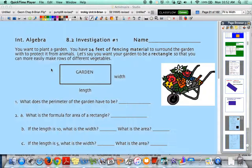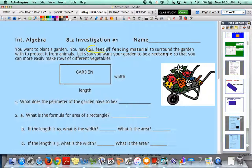Alright, let's check our answers here. If we're thinking back to the warm-up, we've got some similar ideas here. So you want to plant a garden, you have 24 feet of fencing material to surround the garden with to protect it from animals. Let's say you want your garden to be a rectangle so that you can more easily make rows of different vegetables. So the key here is that we are given 24 feet of fencing. So what does the perimeter of the garden have to be? Well, if you've got 24 feet of fencing, then that is the perimeter because we're going to be putting fencing around the perimeter here. So hopefully at 24 feet there.